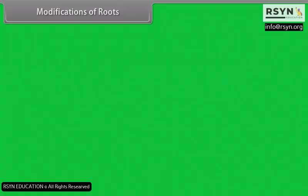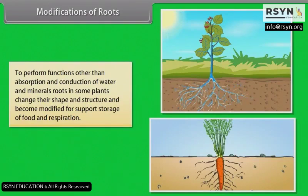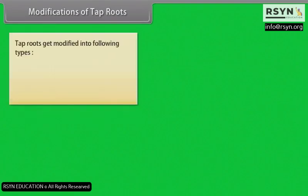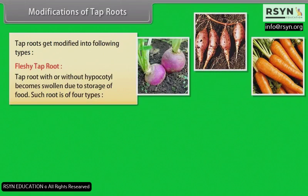Modifications of roots: To perform functions other than absorption and conduction of water and minerals, roots in some plants change their shape and structure and become modified for support, storage of food, and respiration. Modifications of tap roots: tap roots get modified into the following types. Fleshy tap root — tap root with or without hypocotyl becomes swollen due to storage of food. Such root is of four types.